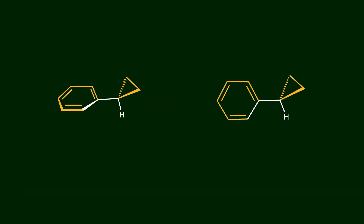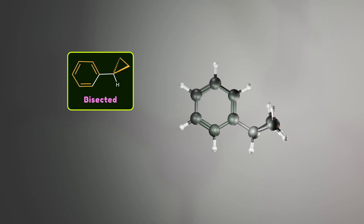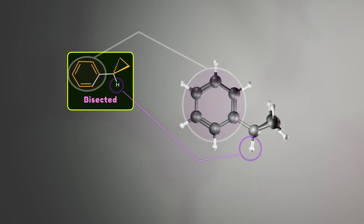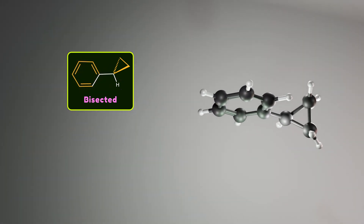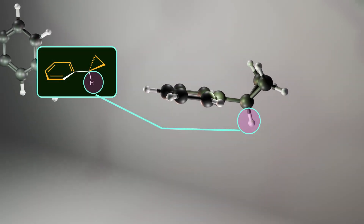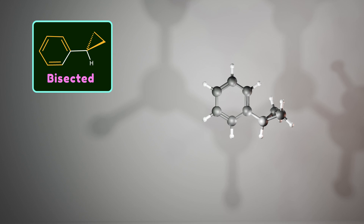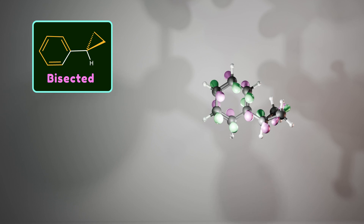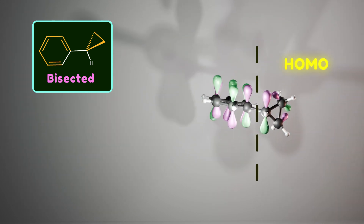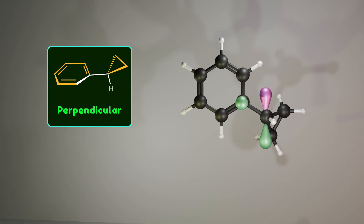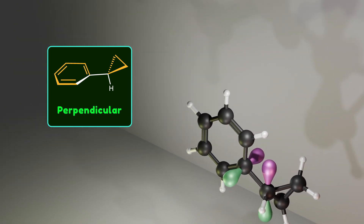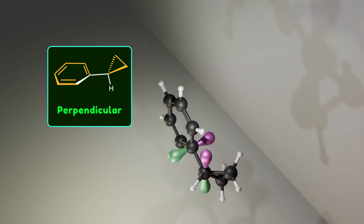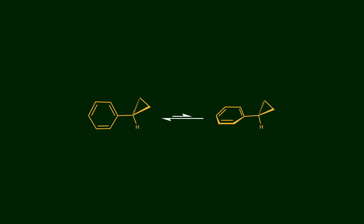In phenylcyclopropane, there are two possible conformations: bisected and perpendicular. The nomenclature is based on the angle between the carbon-hydrogen bond and the phenyl ring. In the bisected conformation, the carbon-hydrogen bond and the phenyl ring are in the same plane, with an angle of zero between them. In the perpendicular conformation, the angle is 90 degrees. In the bisected conformation, the tangential orbital of cyclopropane and the phenyl ring are aligned and interact. In the perpendicular conformation, they are perpendicular and cannot interact. Because of this, the bisected conformation is more stable.